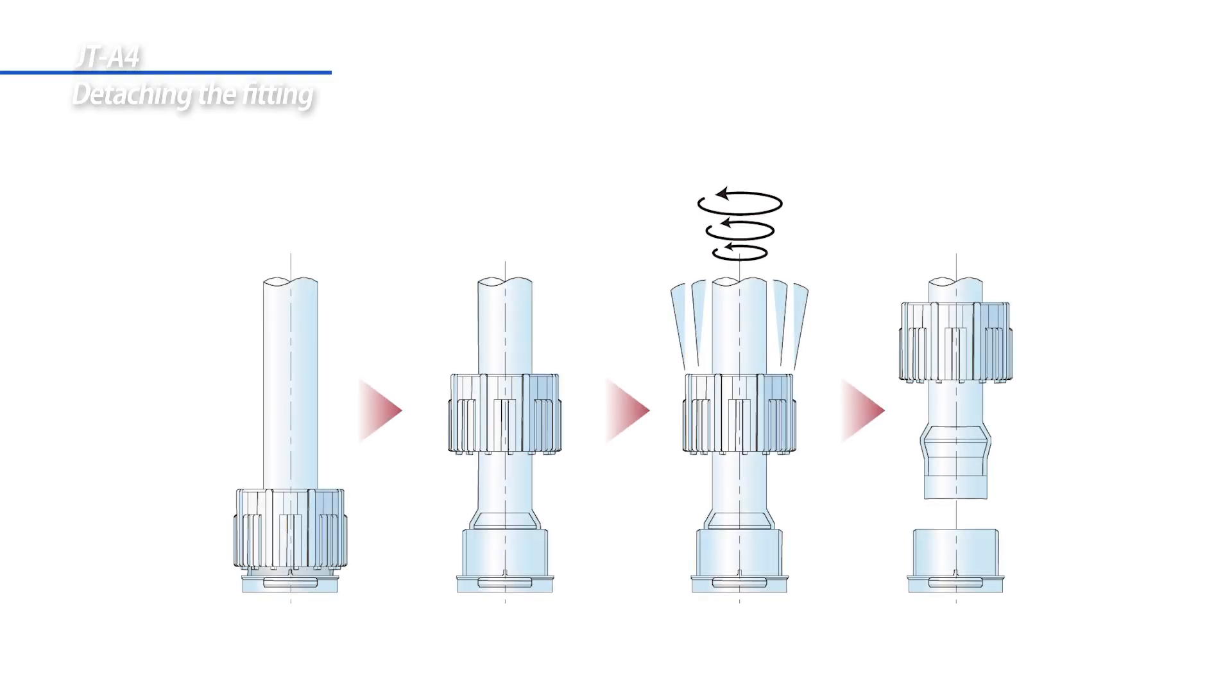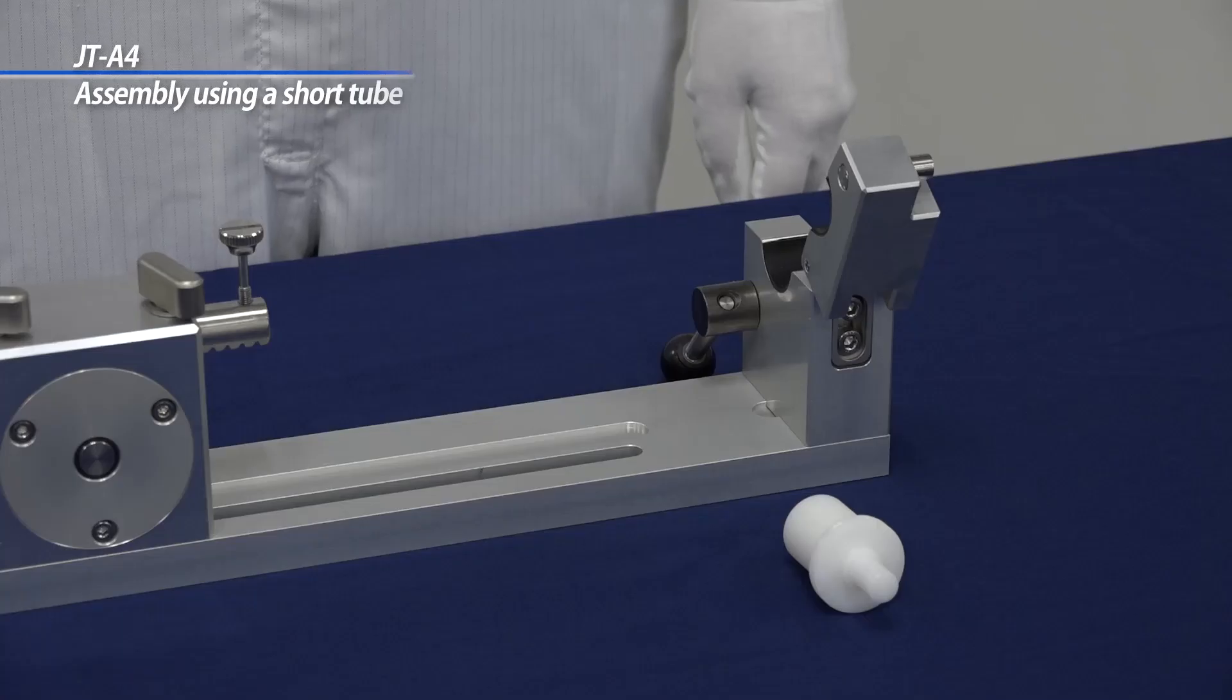To disassemble the fitting, first fully detach the union nut from the fitting. Turn the tube in a circular motion until it can be pulled out of the fitting.